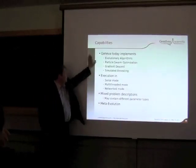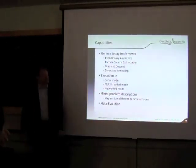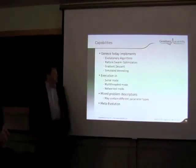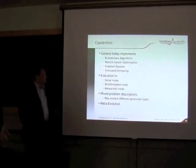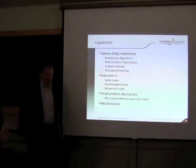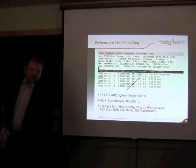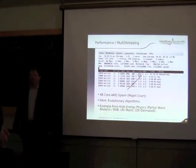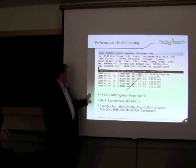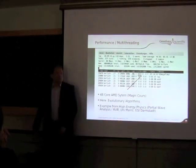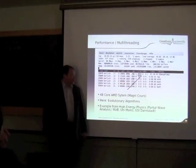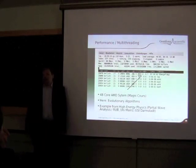Today we've got evolutionary algorithms, particle swarm optimization — which I've shown you both — gradient descent, and simulated annealing or a variant of that which can be parallelized. We also have mixed problem descriptions and meta-evolution. Let's talk a bit about performance. This is on a 48-core AMD system in multi-threaded mode. You can see that it uses more CPU time than is available on paper, which is a problem of the Linux top program. But the point is that it is able to saturate pretty much any machine you give it.